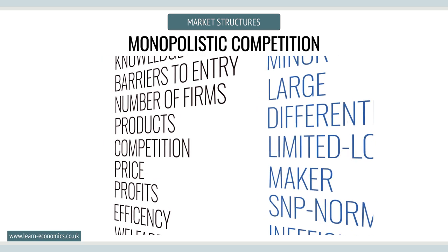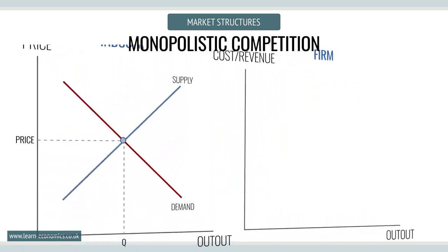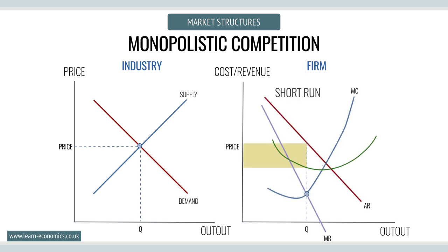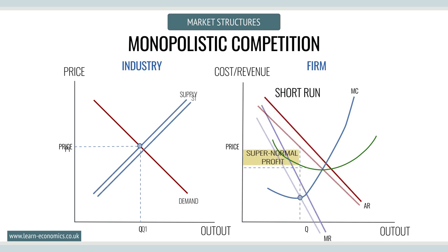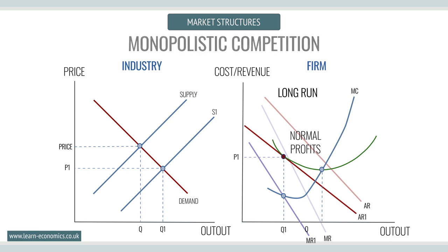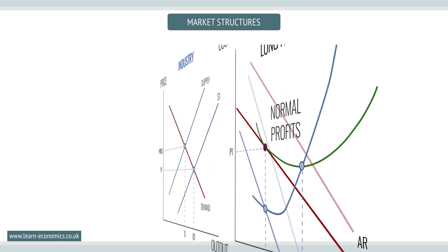In the long run, new firms will be attracted into the market by the thought of supernormal profits. This increases competition for existing firms. Some consumers will switch to these new entrants and demand for the product of existing firms will fall. Existing firms that cannot differentiate themselves will leave the market. This process continues so that the marginal firm operates just where marginal revenue equals marginal cost and only makes normal profits at price P1.